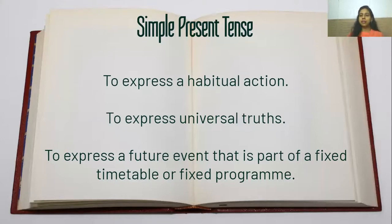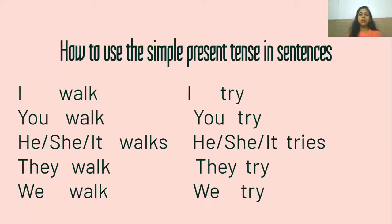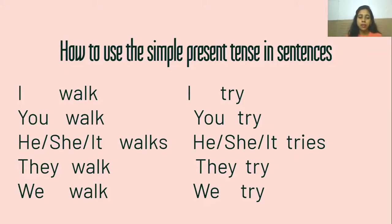Let's see the structure of simple present sentences. To use the simple present tense, we need to use directly the root form of the verb for I, you, they, and we. So for example, if the verb is walk, you will directly use it for I, you, they, and we. And for he, she, it — or the third person — you will add S to the verb and then use it in the sentence.